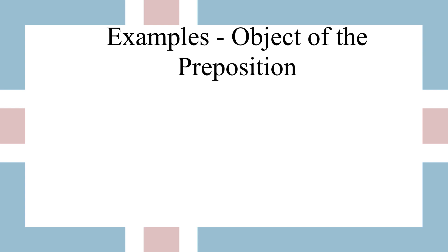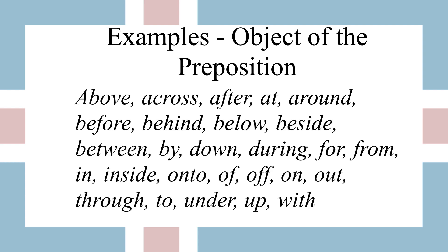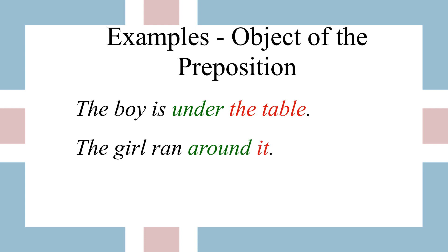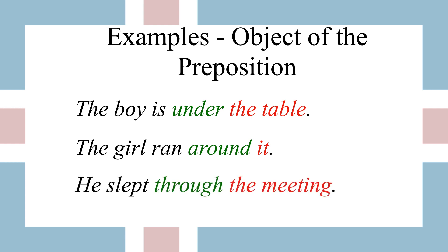There's also the object of the preposition. A preposition shows the relation to a noun. Prepositions can also have an object — it's the noun or pronoun that comes directly after the preposition. In 'the boy is under the table,' under is the preposition and the table is the object of the preposition. 'The girl ran around it' — around is the preposition, and it is the object. 'He slept through the meeting' — through is the preposition, and the meeting is the object.